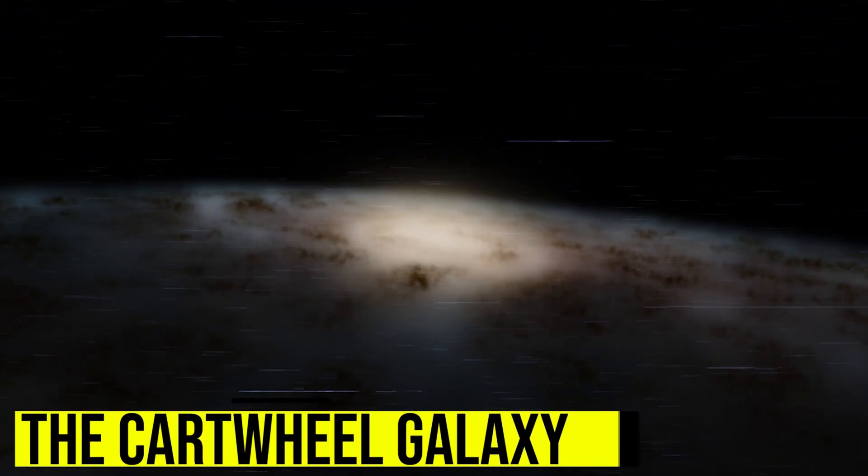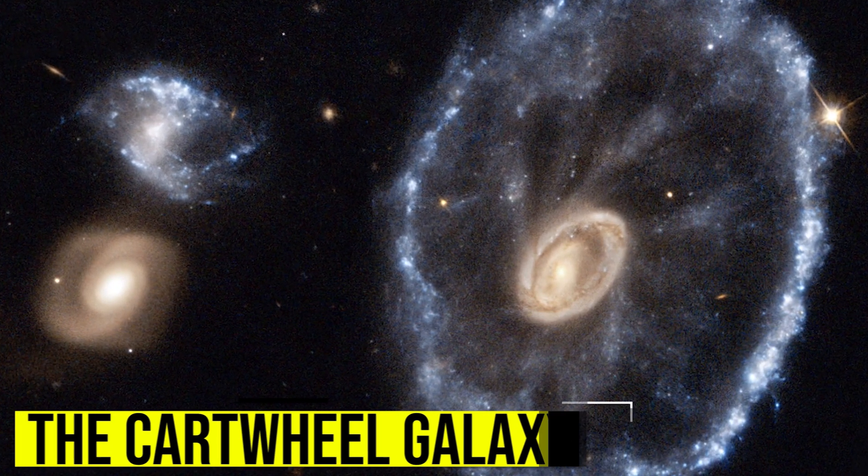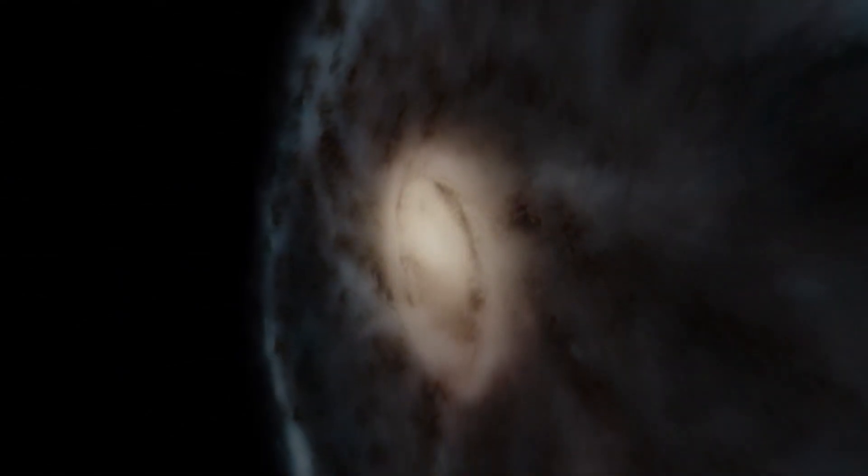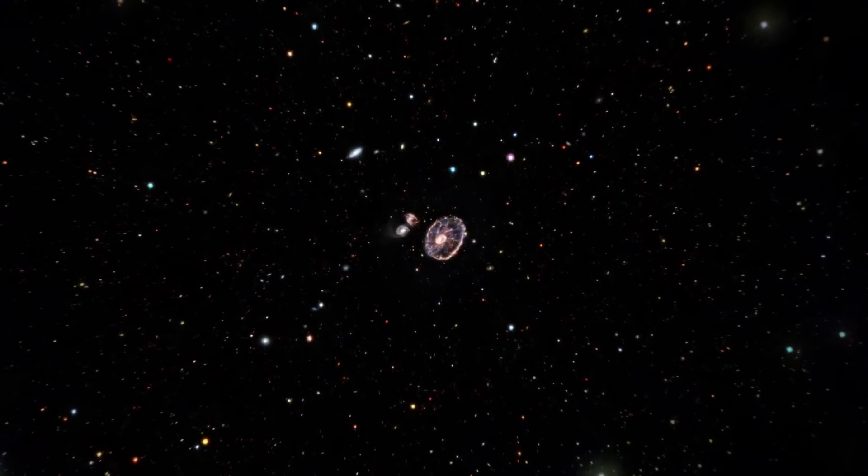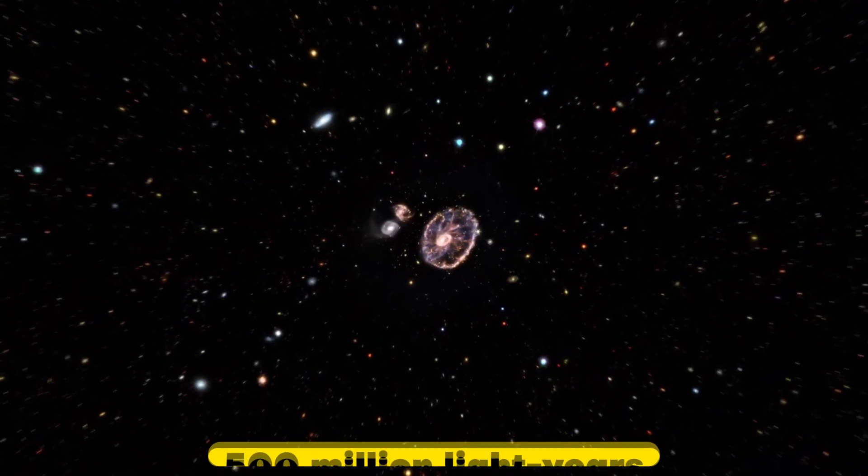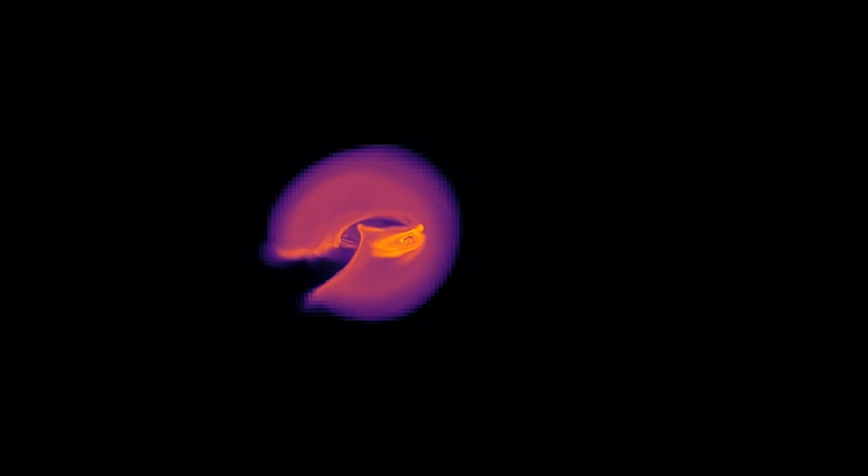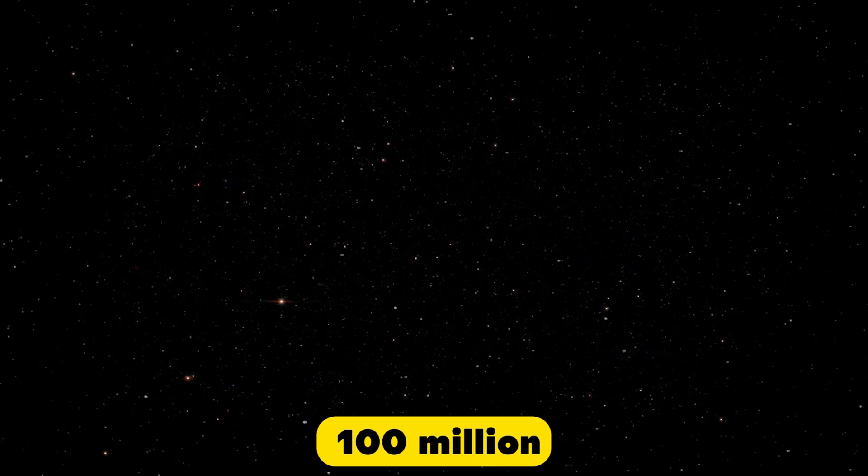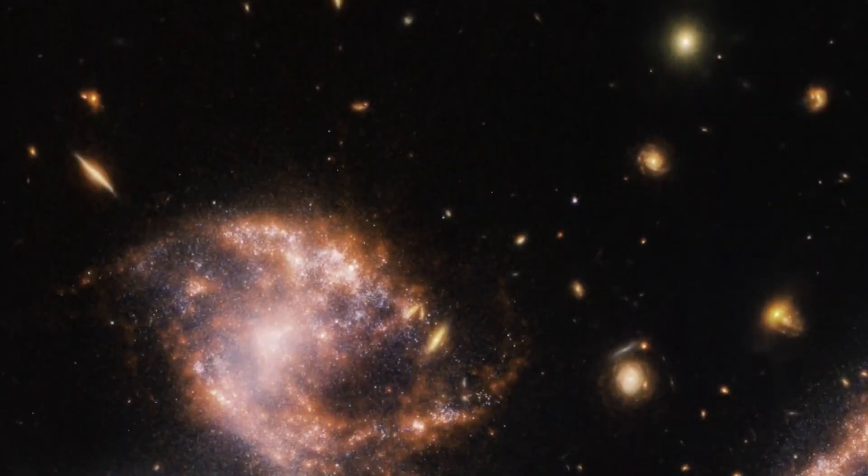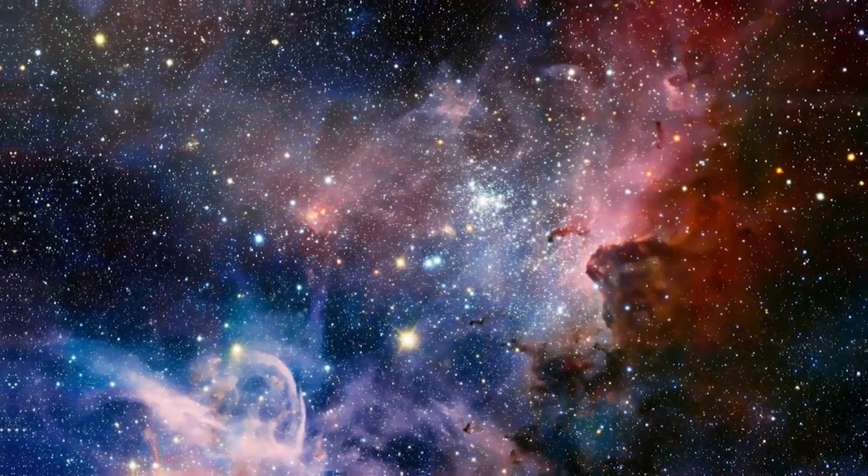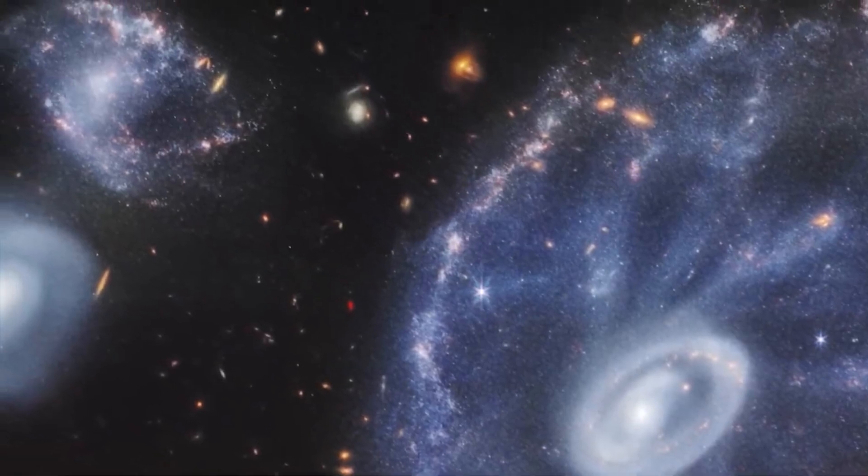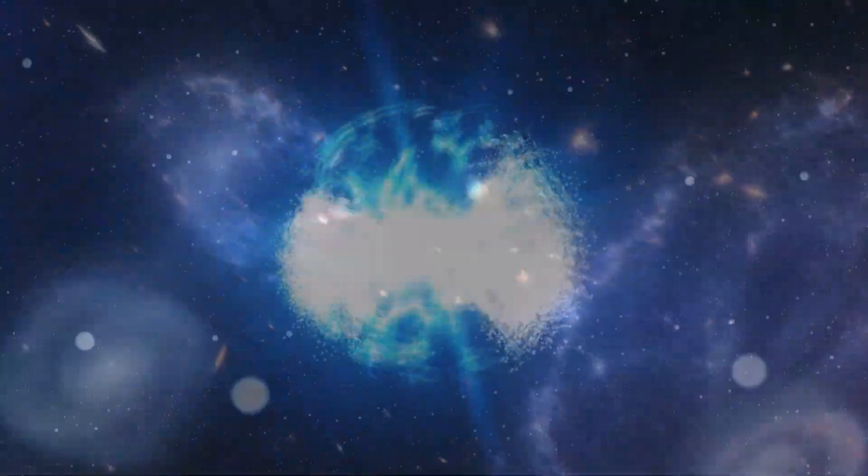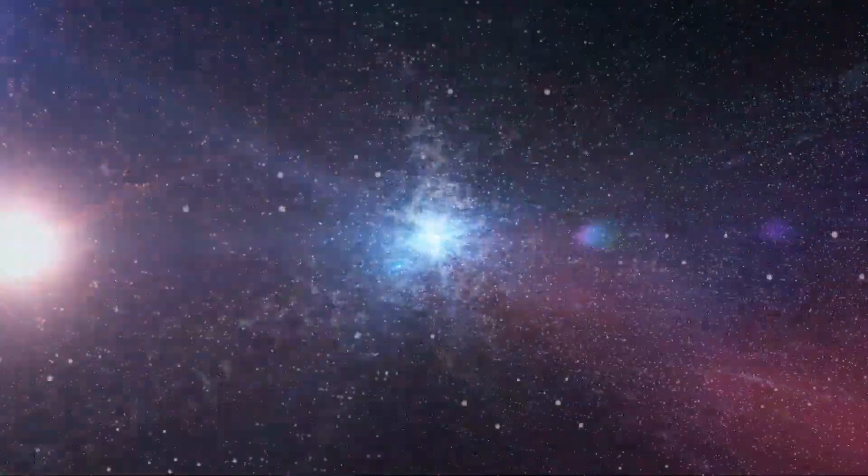The Cartwheel Galaxy is an unusual galaxy that has fascinated astronomers. This galaxy is located in the constellation Sculptor and is approximately 500 million light-years away from Earth. The galaxy's unique shape is due to a collision with a smaller galaxy that occurred over 100 million years ago. The collision caused a shockwave that propagated through the galaxy, triggering a burst of star formation that created the ring-like structure seen today.